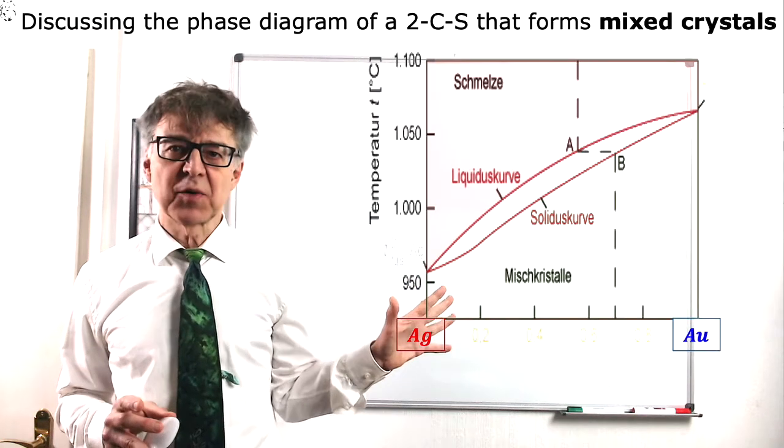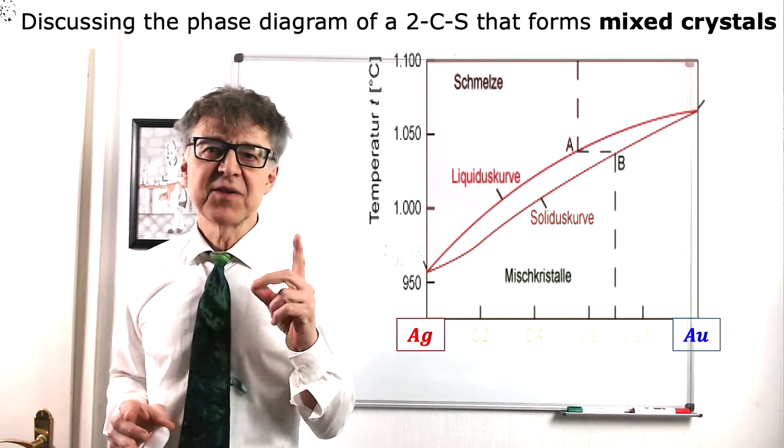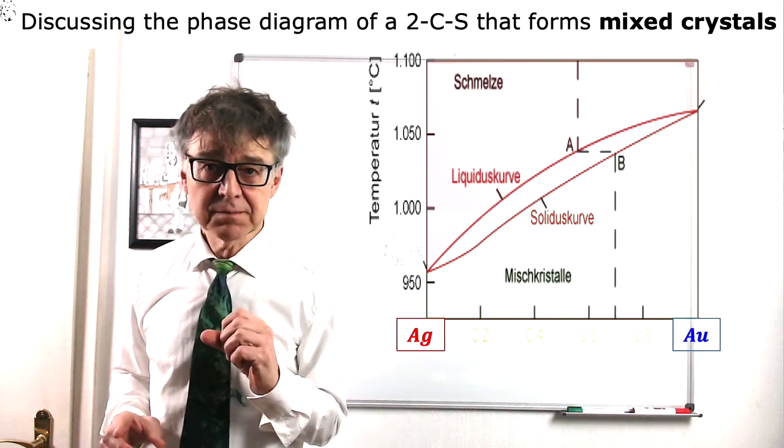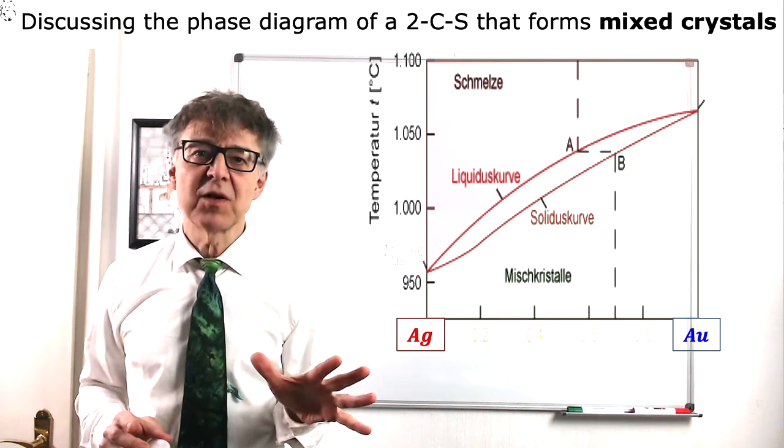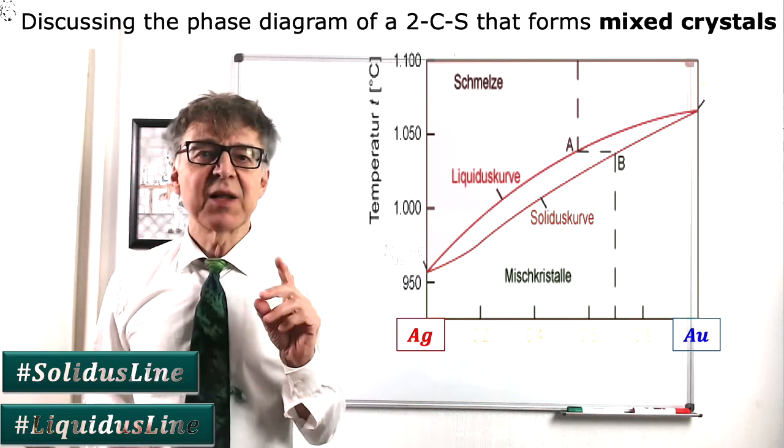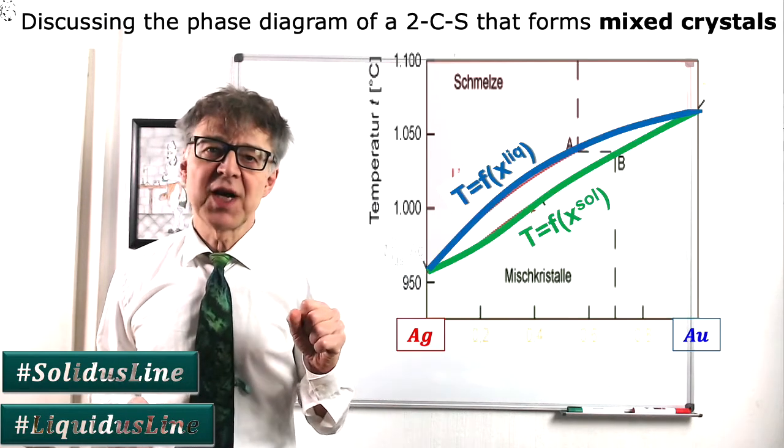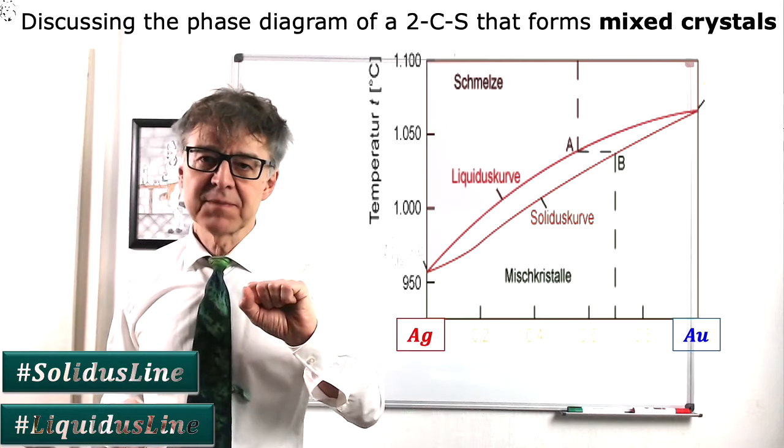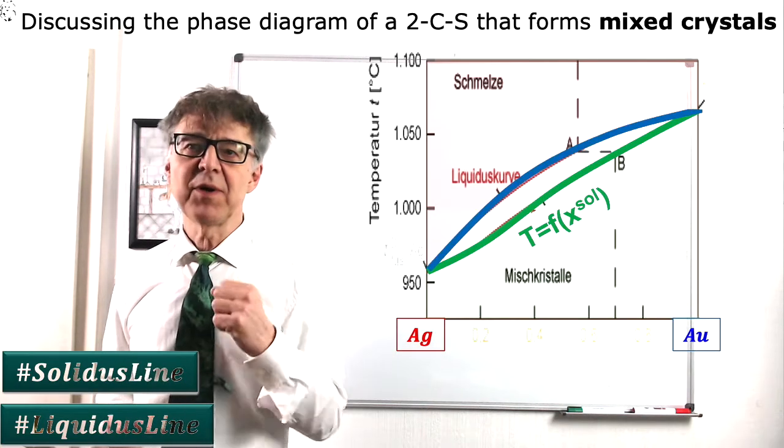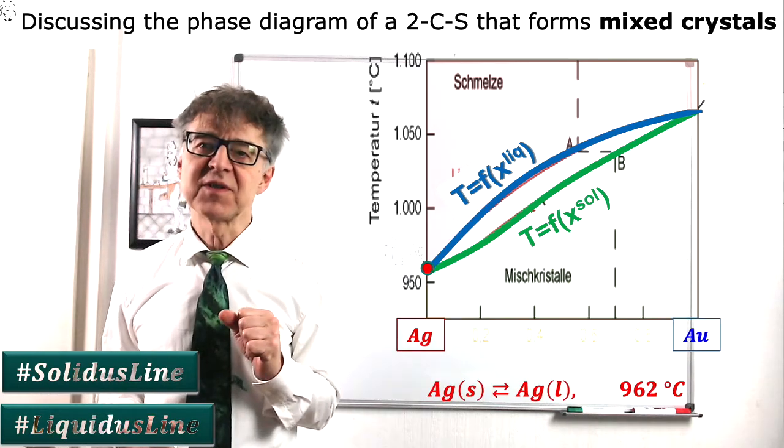This also is a phase diagram of an ideal two-component system, however it is not a boiling phase diagram, but a melting phase diagram. The binodals here are called solidus line and liquidus line, and they tell us at what temperature a solid phase melts or at what temperature a liquid phase solidifies. As with any ideal phase diagram, we have only two invariant points, namely the phase transformations of the pure substances.